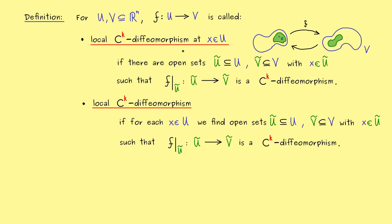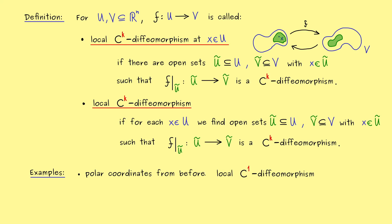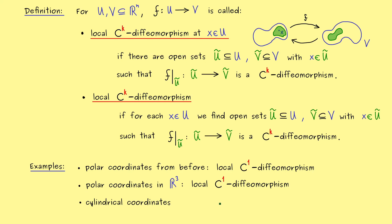To close the video, here are some important examples. We have seen that polar coordinates in two dimensions form a local C1 diffeomorphism — we may still need to check it explicitly for every point, but it already looked good. In a very similar way, polar coordinates in three dimensions also form a local C1 diffeomorphism. Again, the important point is that it only works with the local definition. We can continue this discussion with other coordinate systems: cylindrical coordinates are another important example, and the result is the same — it may not work globally as a C1 diffeomorphism, but it always works locally. As we will see later, for example with integration, having it locally is already good enough.